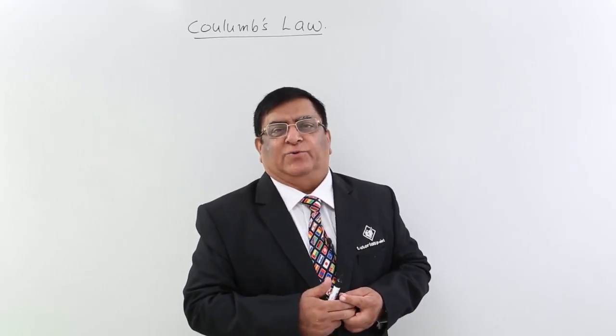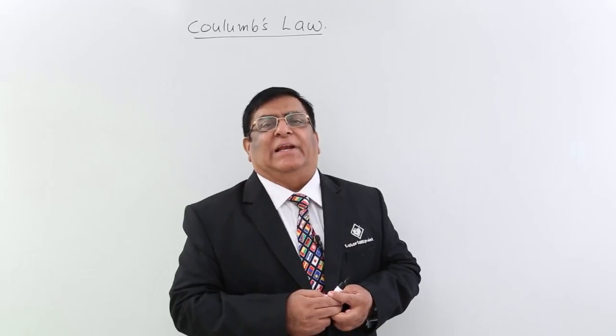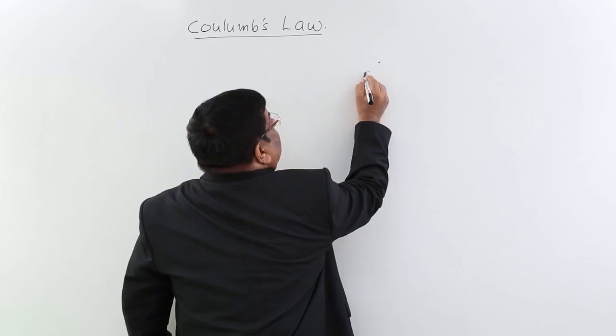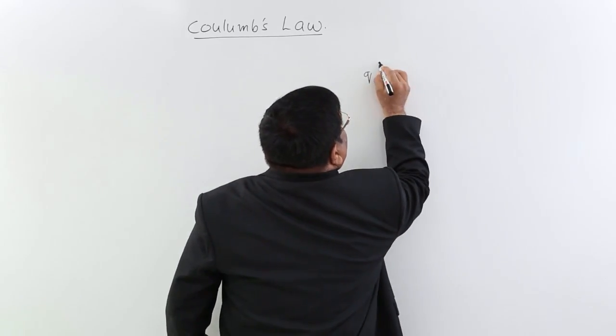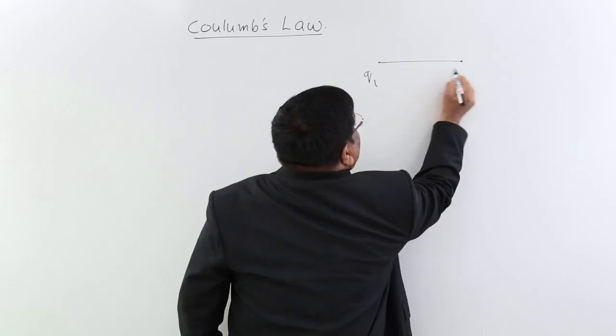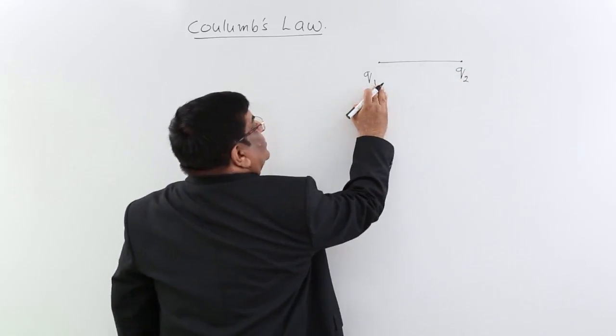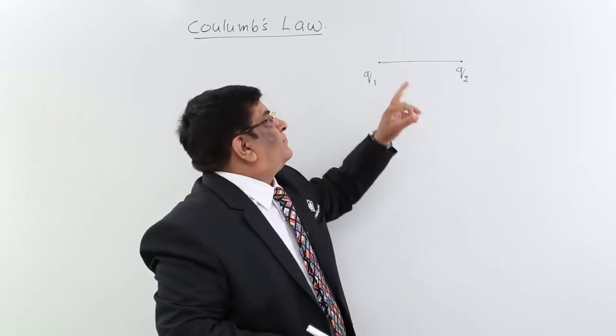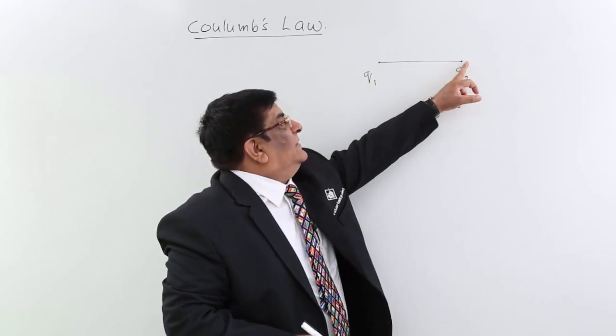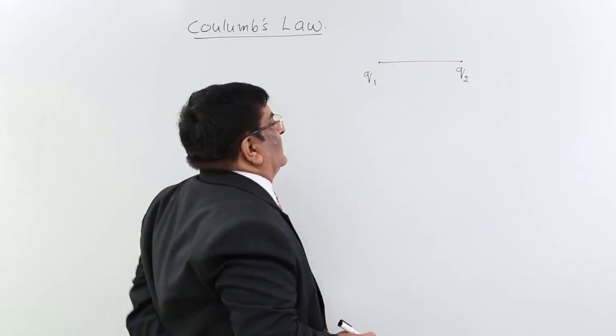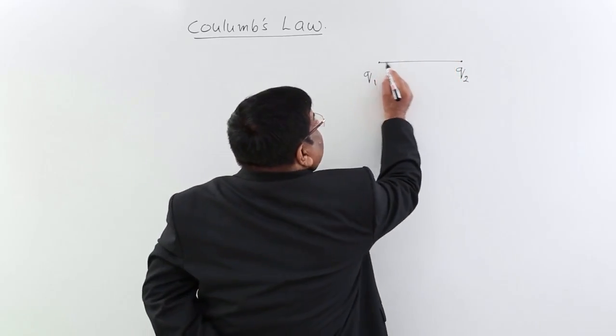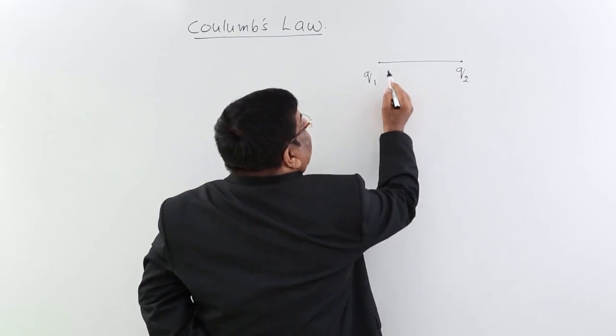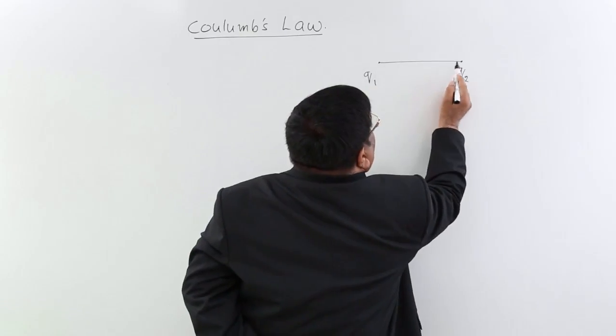Coulomb said that if there are two particles having electrical charge, may be one particle is having charge magnitude Q1, there is another particle which is having charge of the magnitude Q2, then there will be a force. This will apply force on this, this will apply force on this. So the force applied on this will be in a direction that is along the line joining the two charges.